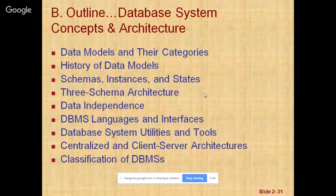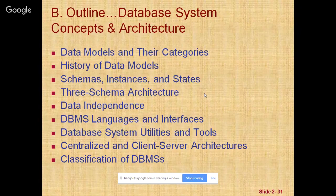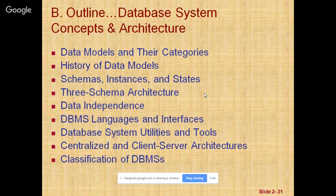Going on to the next topic in Unit 1 — database system concepts and architecture — we will be studying data models and their categories, history of data models, schemas, instances and states, three-schema architecture, data independency, DBMS languages and interfaces, database system utilities and tools, centralized and client-server architecture, and classification of DBMS.